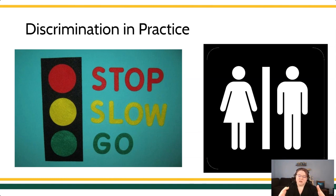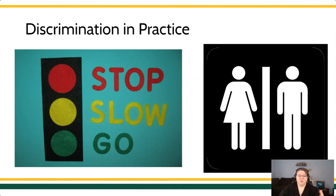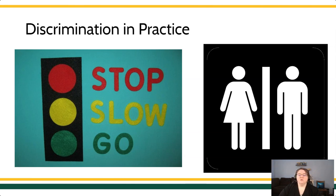Another example of everyday discriminative stimuli could be the signage on restrooms. There are very different consequences for walking into a restroom with the shape that has the little cape behind the figure as opposed to the one that doesn't. Because I appear as a very female individual, if I walk into the men's room, people are going to stare or ask me to leave. If my behavior is not under stimulus control and I'm equally likely to go into either restroom, I might face some consequences. Remember, we learn these through experience.